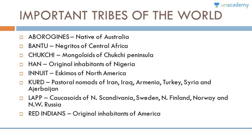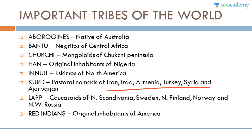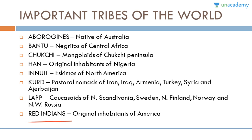Important tribes from around the world include: Aboriginals, native to Australia; Bantu, Negritos from the Negroid race residing in Central Africa; Chukchi, from the Mongoloid race on the Chukchi Peninsula; Hen, original inhabitants of Nigeria; Inuit, the Eskimos of North America; Kurds, pastoral nomads residing in Iran, Iraq, Armenia, Turkey, Syria, and Azerbaijan; Lapps, from the Caucasoid race in Northern Scandinavia, Sweden, Northern Finland, Norway, and Northwest Russia; and Red Indians, the original inhabitants of America.